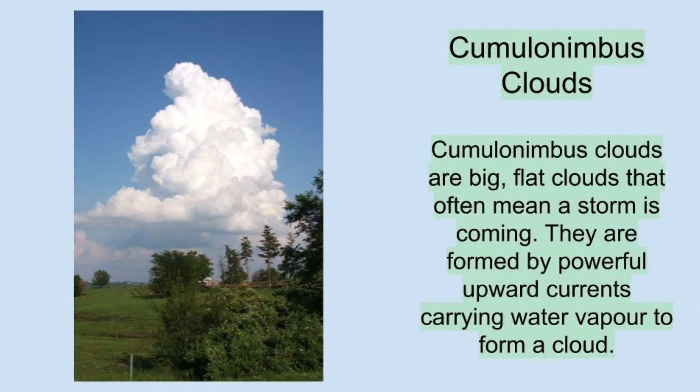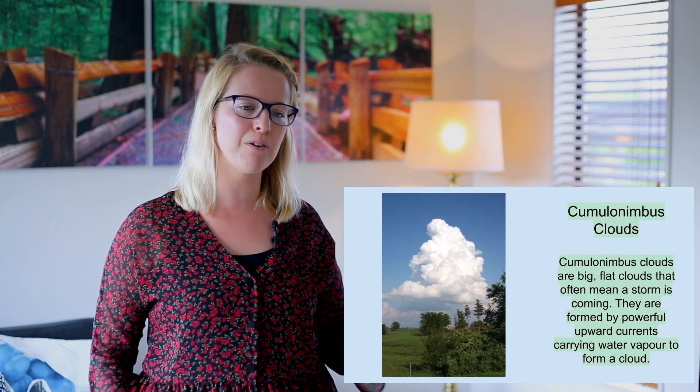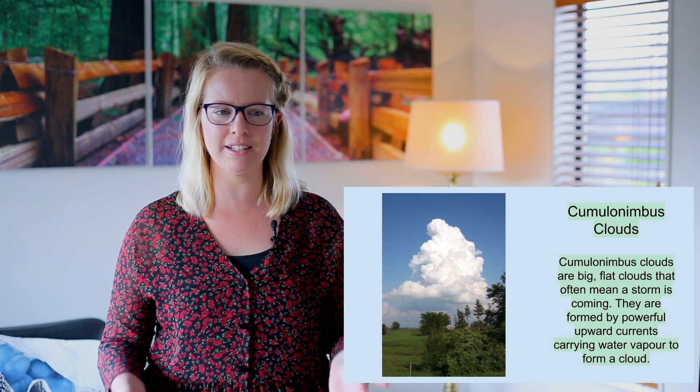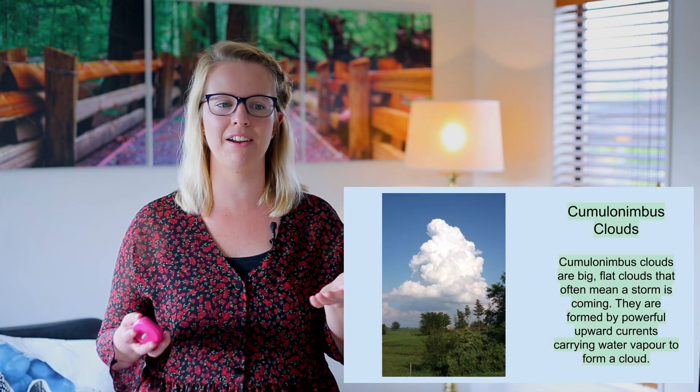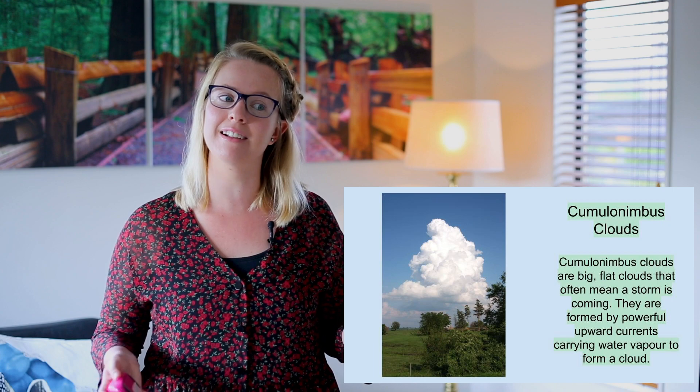Cumulonimbus clouds are big, flat clouds that often mean a storm is coming. They are formed by powerful upward currents carrying water vapour to form a cloud.